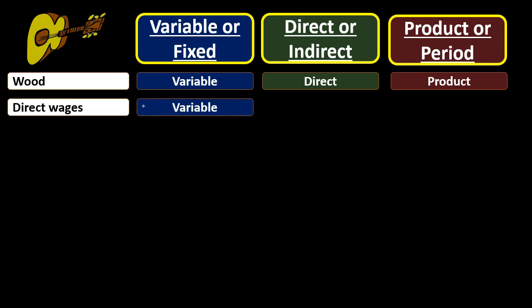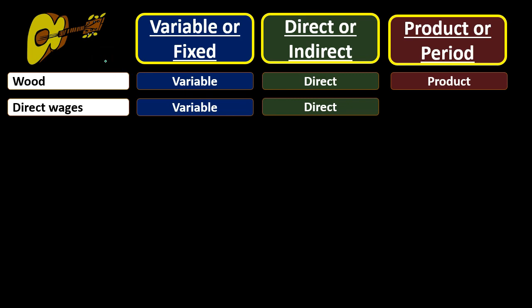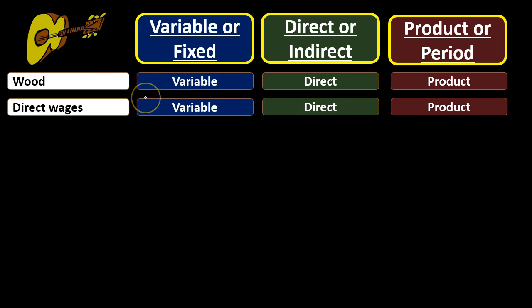If we have direct wages — someone actually making the guitar — it will once again be variable because if we make two guitars we would expect the wages to go up at some variable rate. It's direct because we can apply that person's cost directly to whatever guitars they work on. And it's clearly a product cost because they're working on production. That's unusual in recording, because instead of wages expense, we debit something like work-in-process inventory.